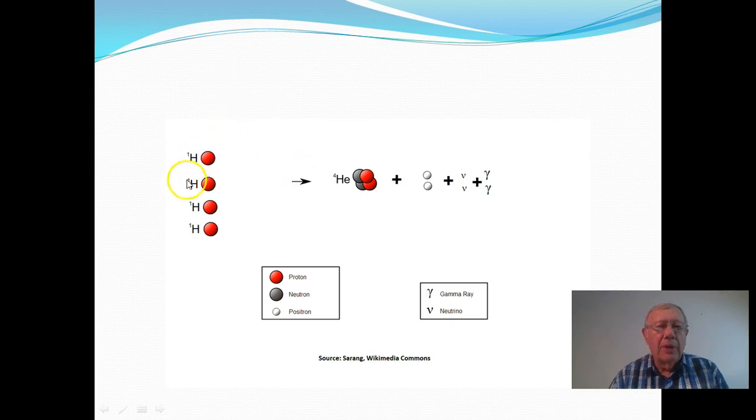Now the thing about these reactants, if we call them that, is their mass. If we find the mass of those four and the mass of these objects here, we find that the mass of those is less than the mass of these. In other words, that looks like a break in the law of conservation of mass, but it isn't.